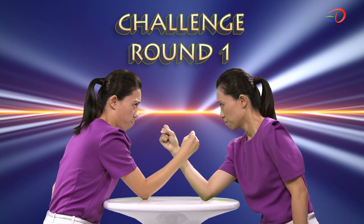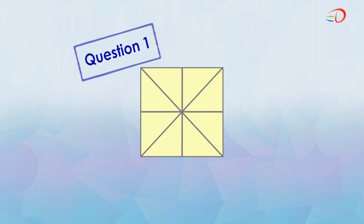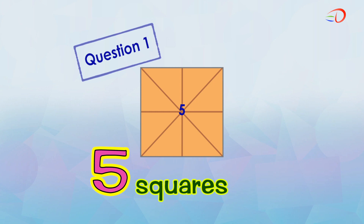Now, let's challenge ourselves. In this figure, what are the basic shapes we can find? Are you able to identify squares? There are five squares: one, two, three, four, and five.